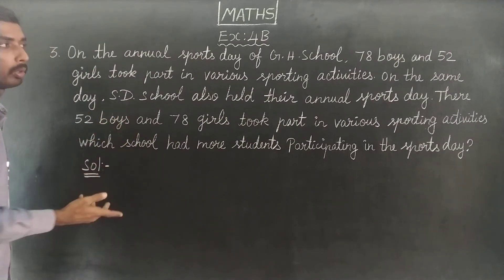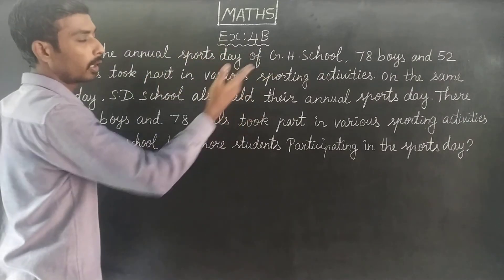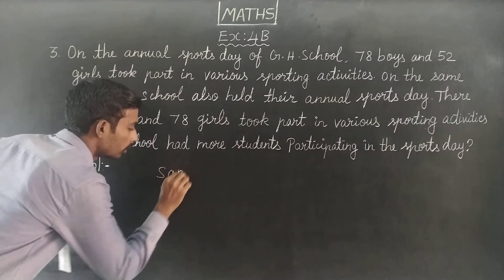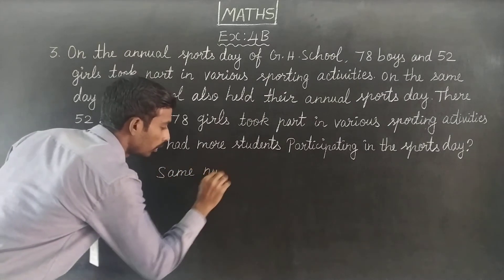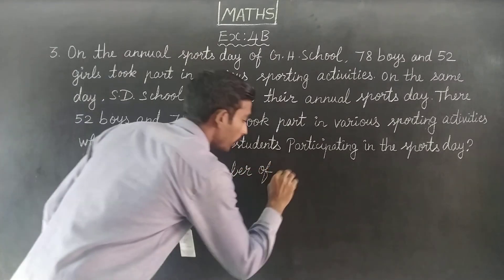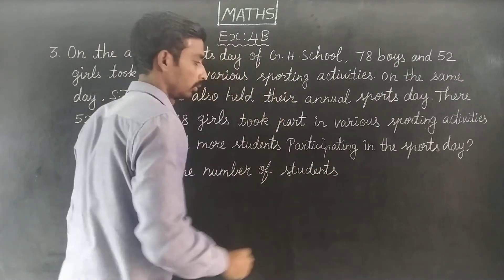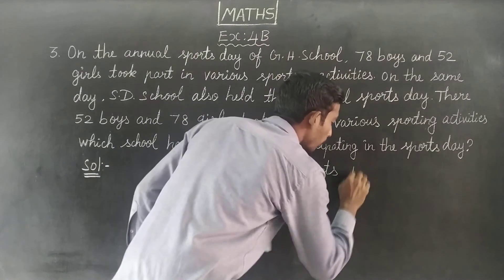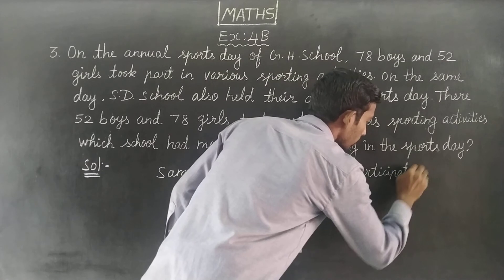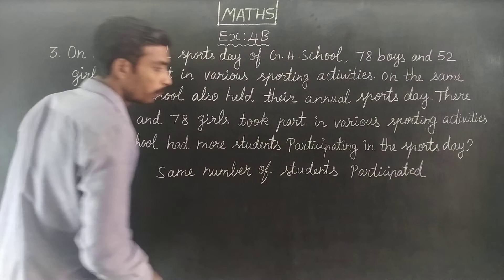If we find the total number of students — boys and girls combined — and add them together, the same number of students participated in both schools.